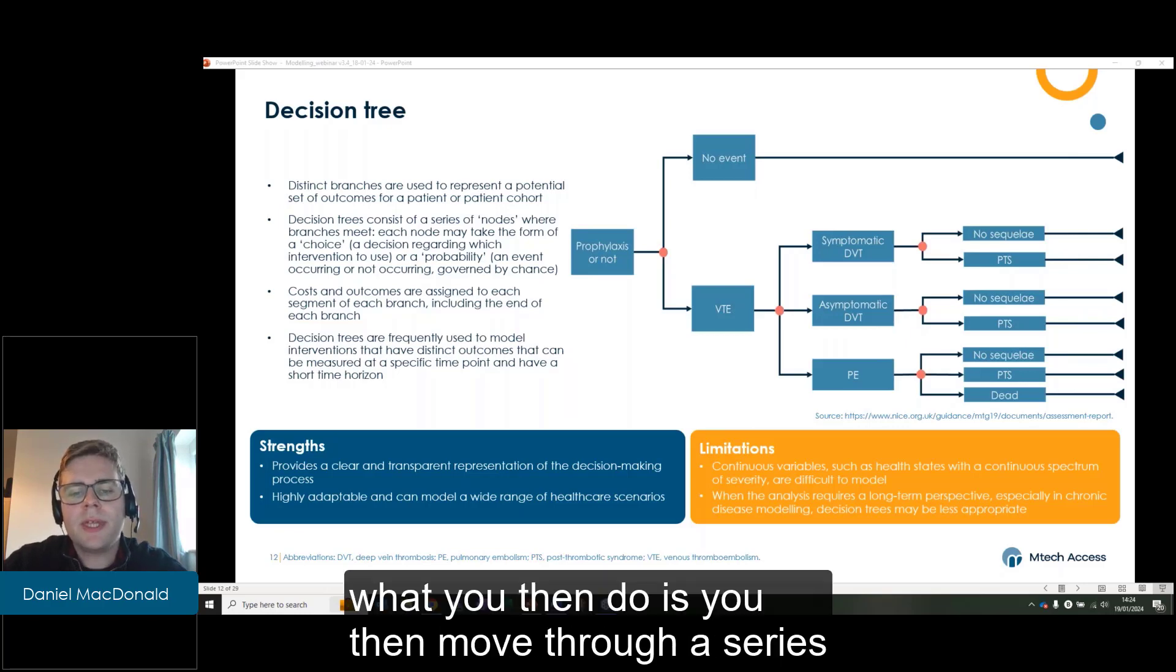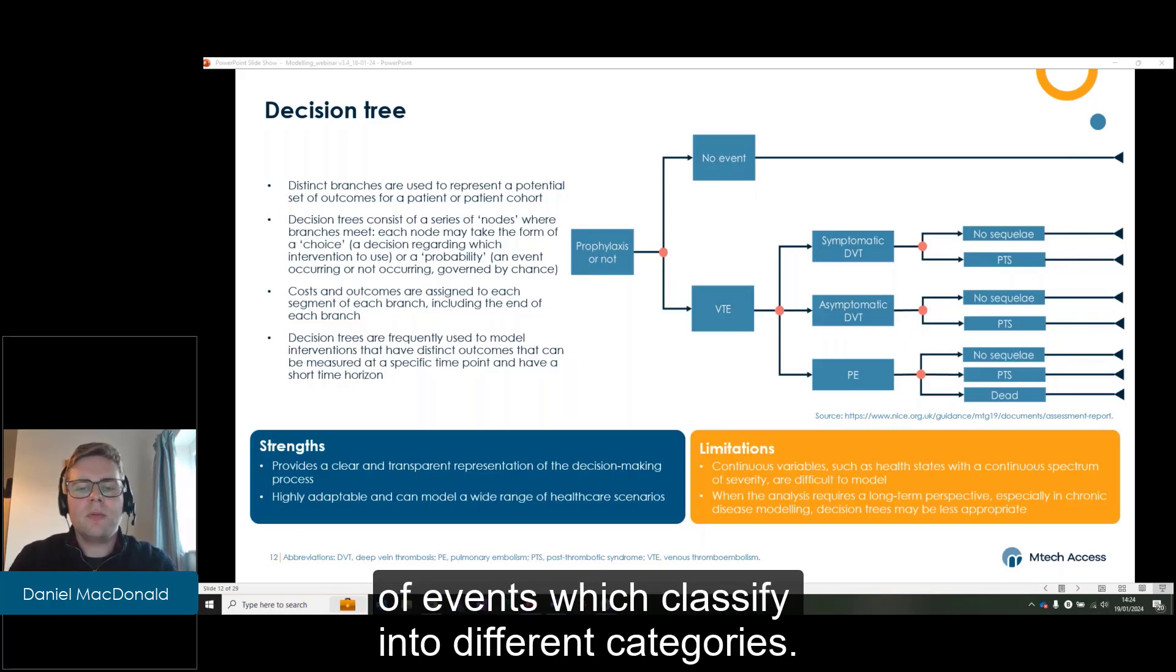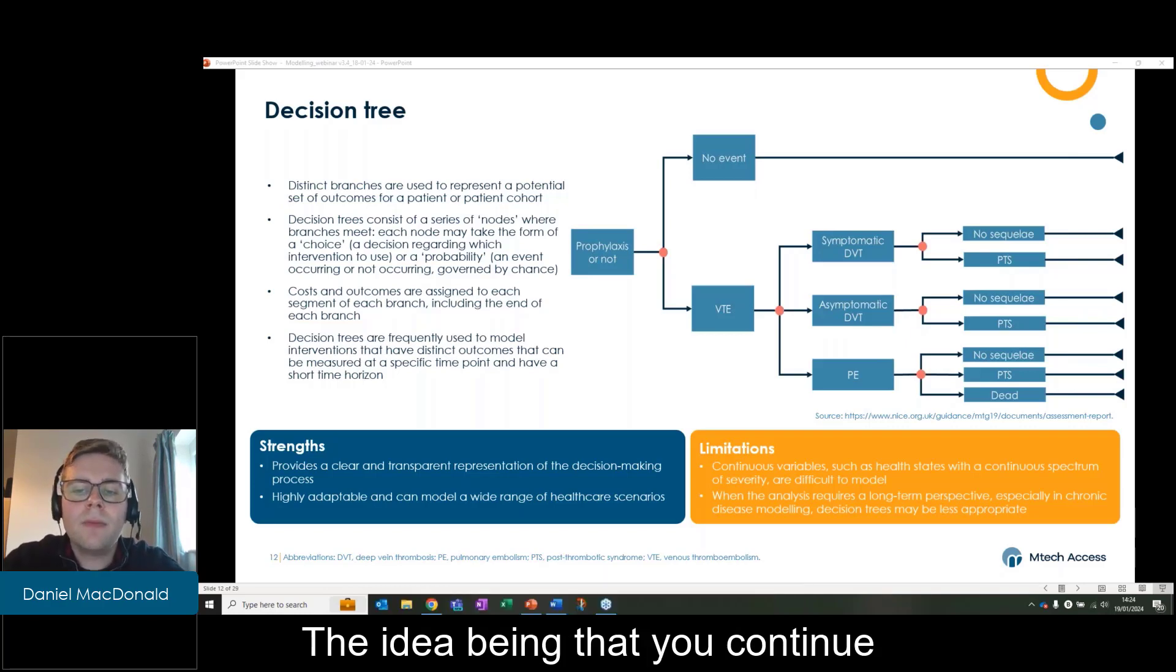With decision trees, what you then do is you move through a series of events which classify into different categories. The idea being that you continue along the different branches relating to what status you are in until you reach the end of a branch known as the terminal node.